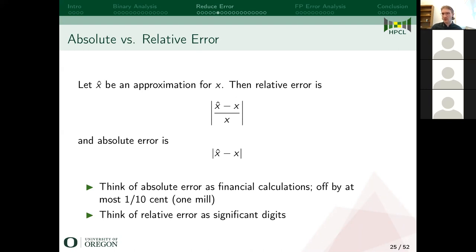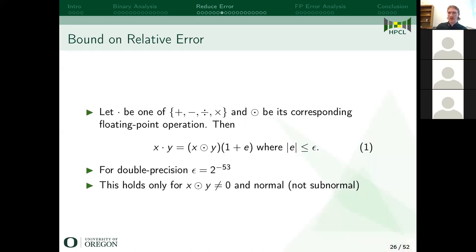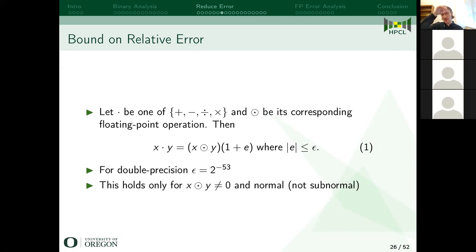This is a common model for floating point error. The actual error of a floating point operation — sometimes called a flop — is very complicated, but we simplify it: we can think of the circle-dot as the floating point version of some real number operation (add, subtract, divide, multiply), and we have some relative error E where the absolute value of E is less than some epsilon. This is machine epsilon — for double precision, epsilon is 2^{-53}, or about 10^{-15} digits. It's a pretty good model, but it only holds for non-zero normal numbers.